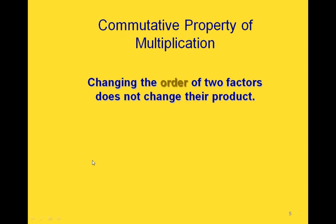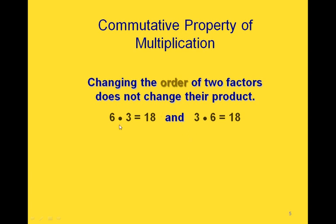The commutative property of multiplication says that changing the order of two of the factors doesn't change the product. So if we're multiplying 6 times 3, we can do it in either order — we can write it as 6 times 3 or as 3 times 6 — and either way we're going to get a product of 18.